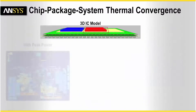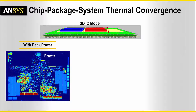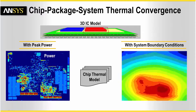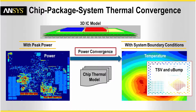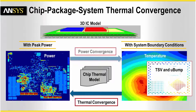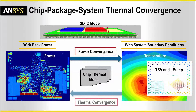Accurate on-chip thermal gradient requires chip-package-system power-temperature convergence. A chip thermal model, which contains temperature-aware power density, along with the package thermal boundary condition from system thermal simulation, delivers convergent chip-package temperature and power.